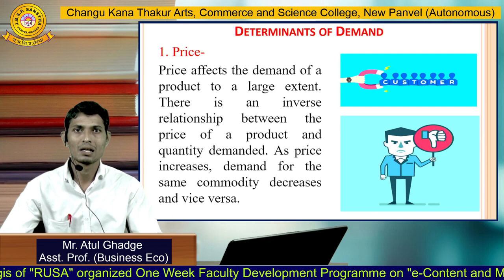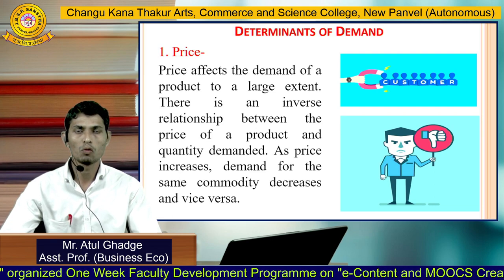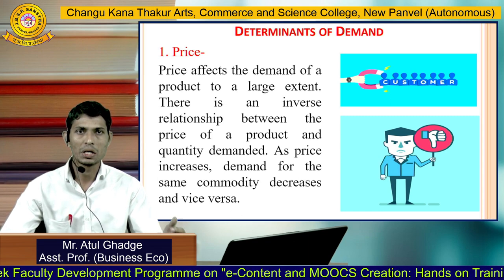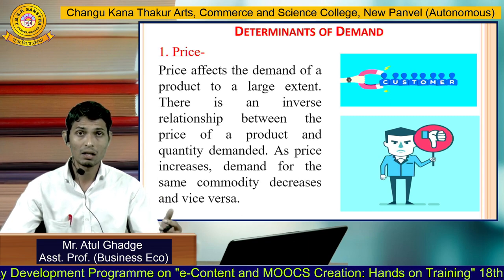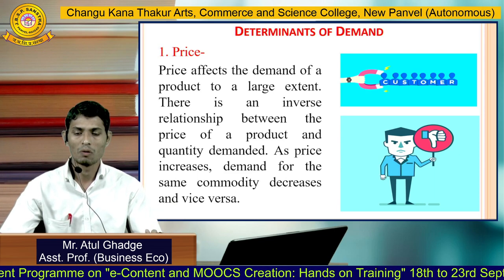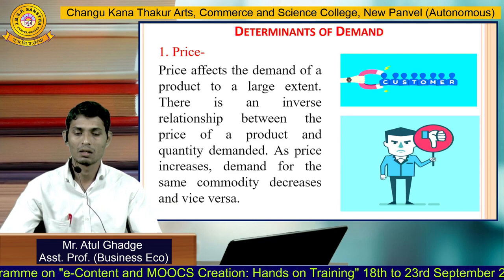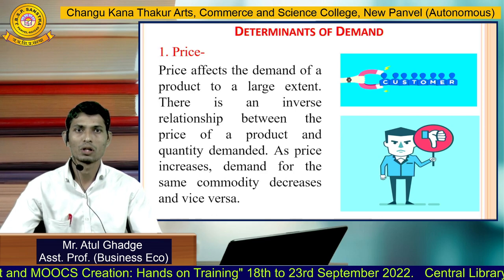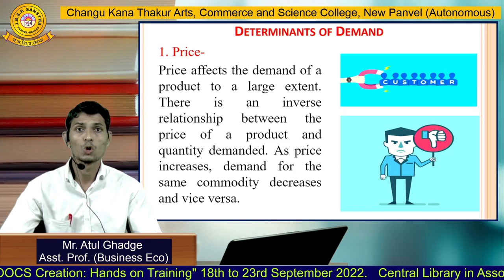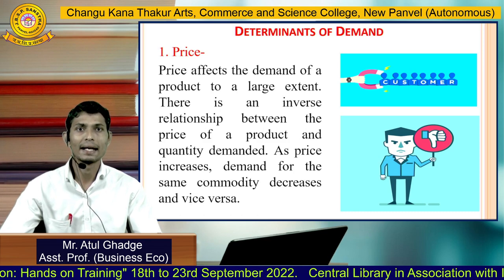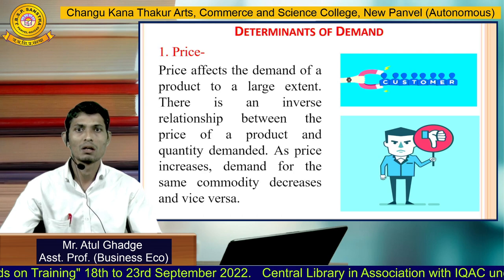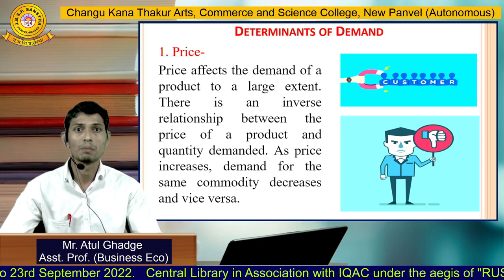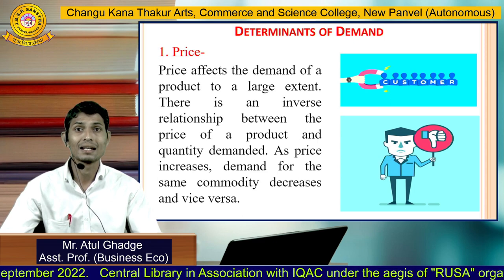Now we will discuss the various determinants of demand. A determinant is the thing which decides the demand for a commodity. The first determinant is price. Price affects the demand of a commodity to a large extent. There is an inverse relationship between the price of a product and quantity demanded — as price increases, demand decreases and vice versa.